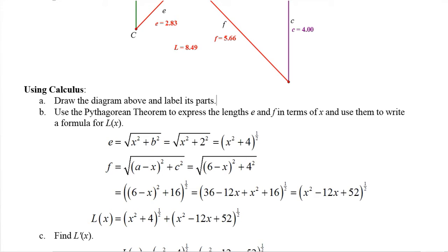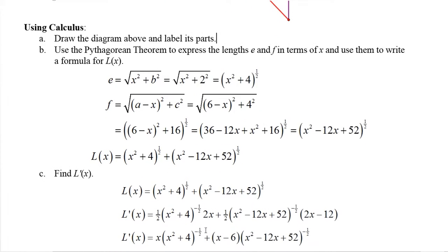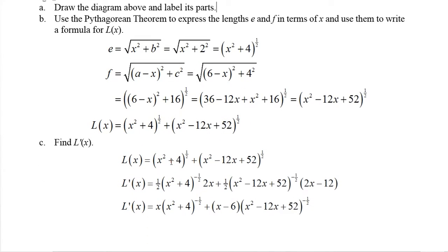This is the total length of pipe. Now if you want to minimize or maximize some function, in this case L of a single variable x, we find its derivative and set the derivative equal to zero. So we need to find the derivative here. This is like u to the one half, so it's one half u to the negative one half times the derivative of the u. The derivative of the inside is 2x. This is like w to the one half, so the derivative is one half w to the negative one half times the derivative of the w. The derivative of the inside is 2x minus 12.